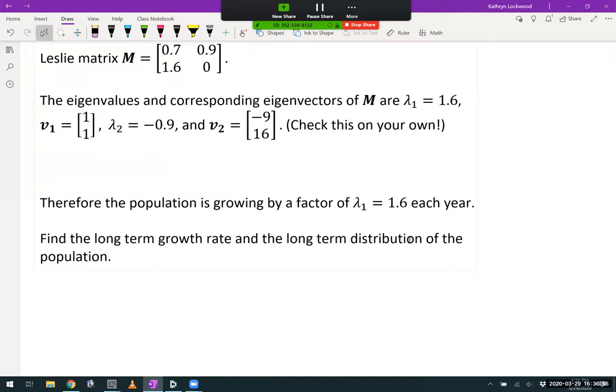The eigenvalues and their corresponding eigenvectors for M are lambda 1, which is 1.6, V1 equal to [1, 1], lambda 2 equal to negative 0.9, and V2 equal to [-9, 16]. I'll let you check this on your own. Now, notice that if we take M times V1, that's equal to lambda 1 V1, because lambda 1 is an eigenvalue corresponding to eigenvector V1, and that's equal to 1.6 times V1. So after one time period, the population distribution has increased by a factor of 1.6, the largest eigenvalue. We'll call that our growth factor, lambda 1 equal 1.6.